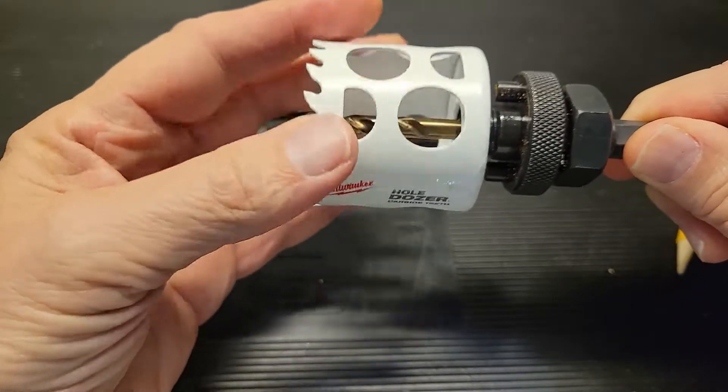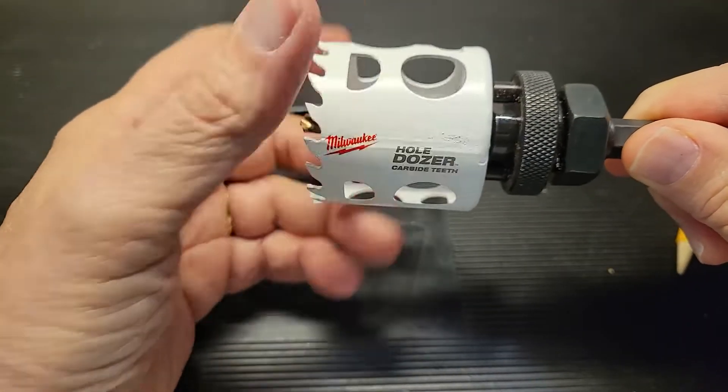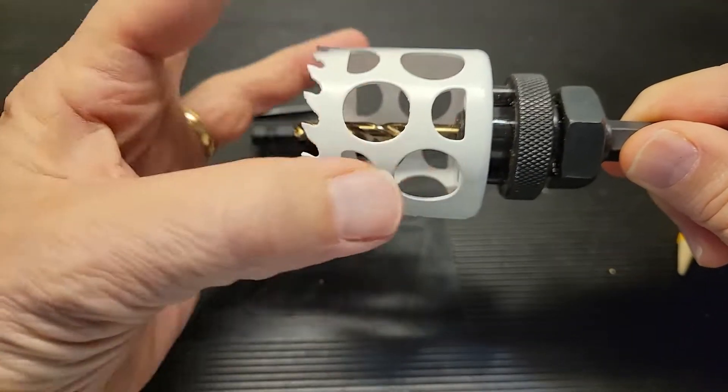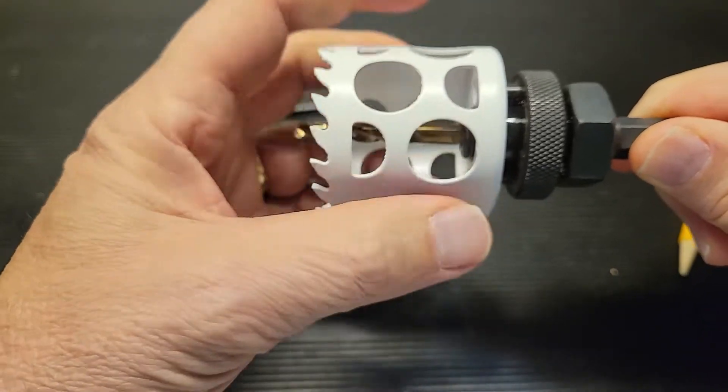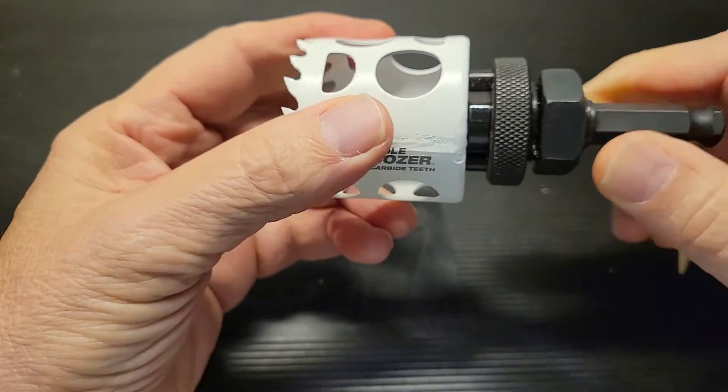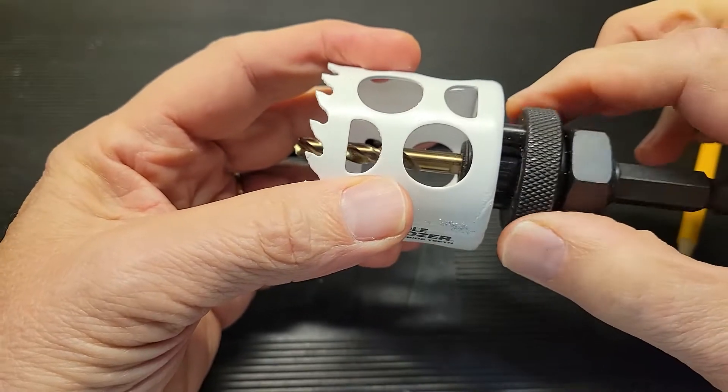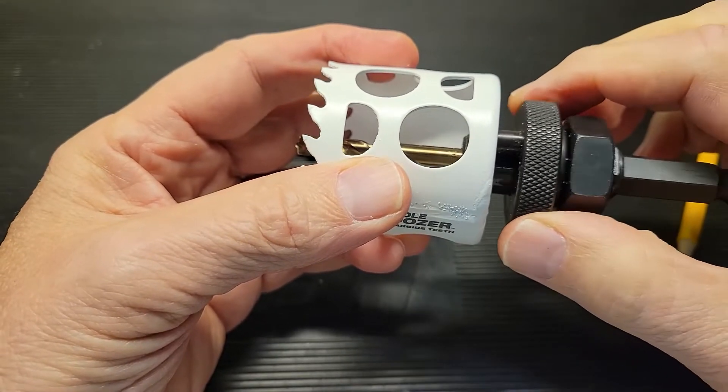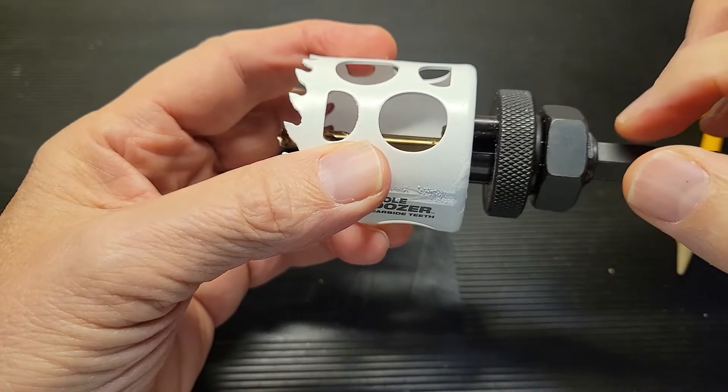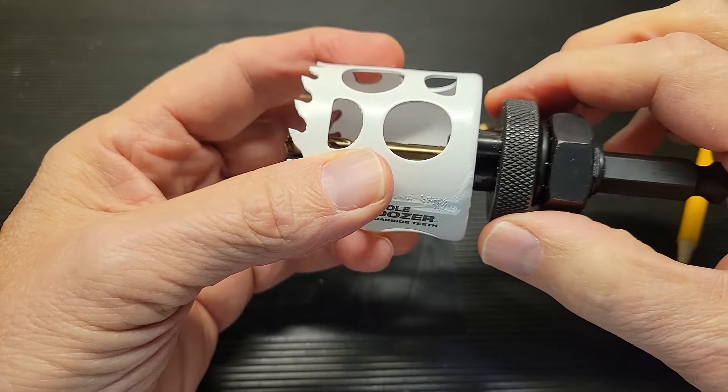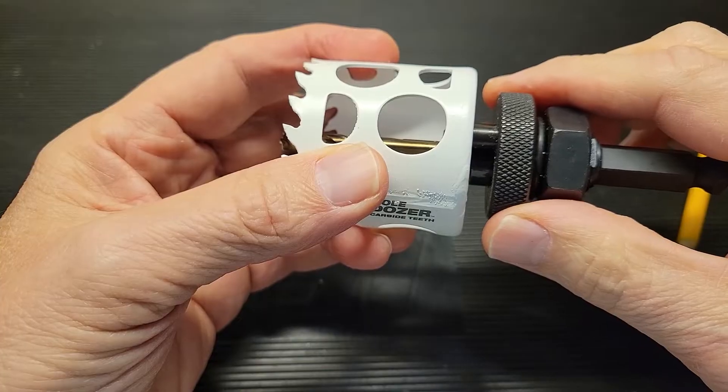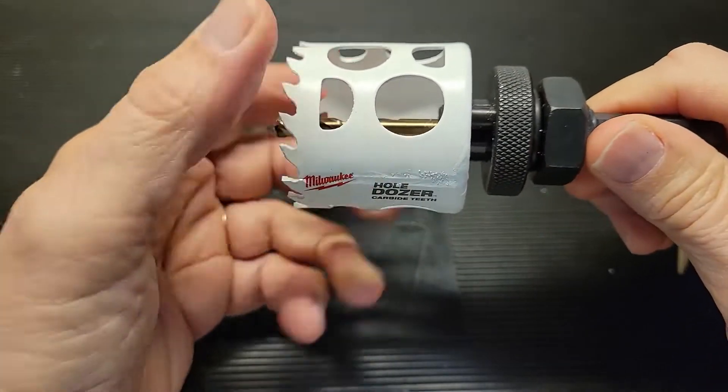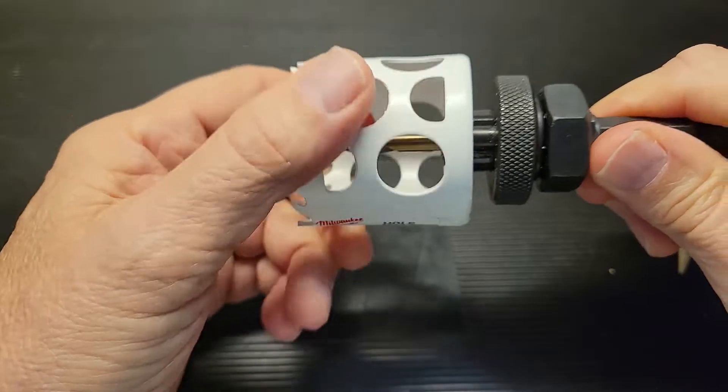You're going to put it on the thread, and what you don't want to do is force this on. So when you get to the end of the thread here, you want to back off a little bit. Since this doesn't spin on this spindle, you just align it with the hole. You just turn this until you get one of the holes.